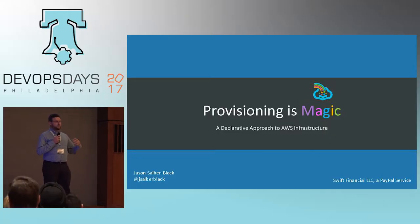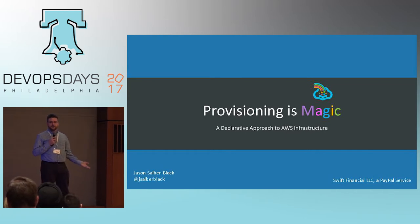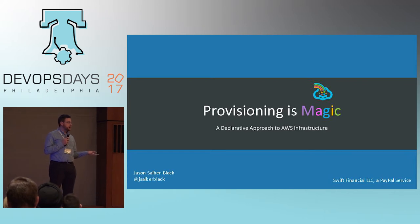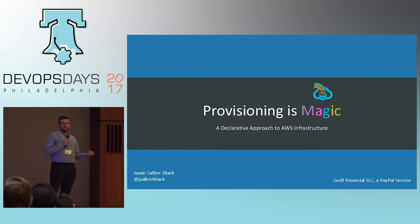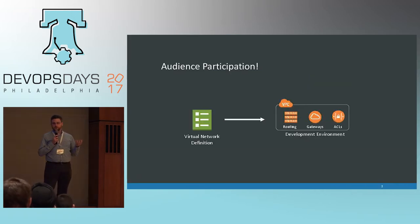I'm Jason Sauber-Black. I work for Swift Financial, which recently became part of PayPal. Today I'll be talking about infrastructure as code, specifically the provisioning of virtual networking at Amazon using a tool called SparkleFormation.